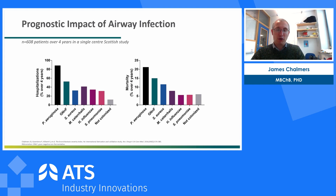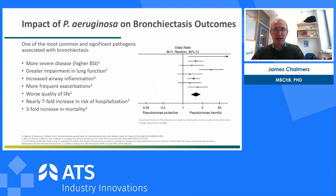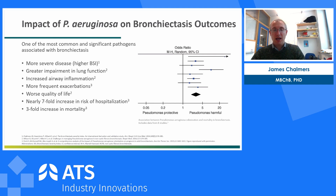Pseudomonas is undoubtedly a poor prognostic factor in bronchiectasis. Looking at a meta-analysis of eight studies, the estimate was that Pseudomonas increases the risk of death by threefold and increases the risk of hospitalization by almost sevenfold compared to not being infected with Pseudomonas. Patients with Pseudomonas also had worse disease in general — worse lung function, more frequent exacerbations, and worse quality of life. When we look at markers of airway inflammation, they are also much higher in people with Pseudomonas, explaining why we see that worse prognosis. It's a major driver of the severity and the inflammation of the disease.